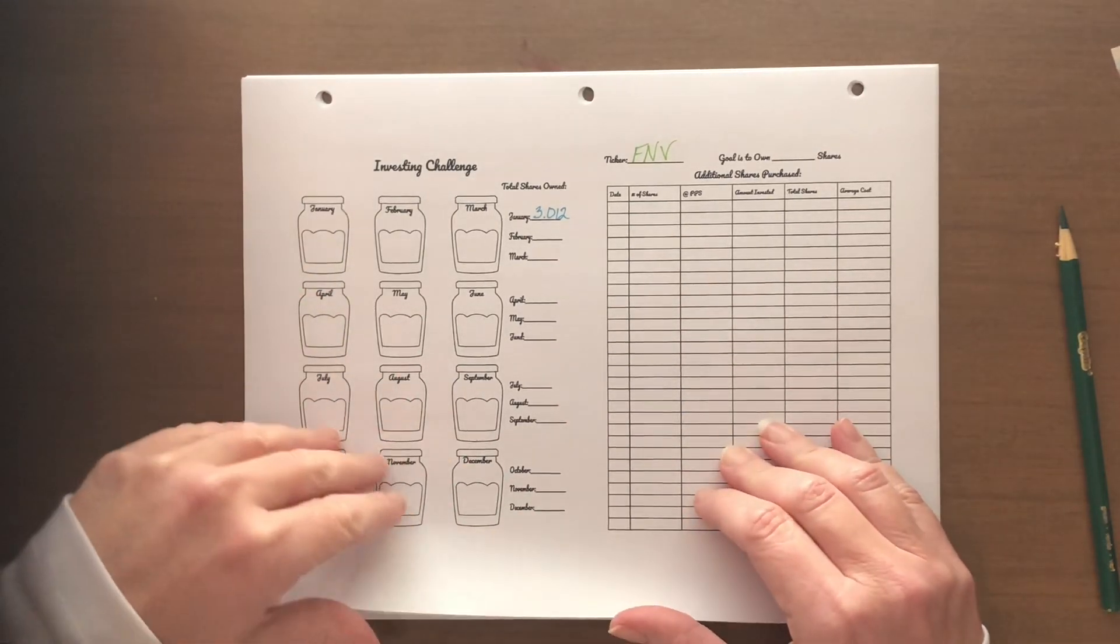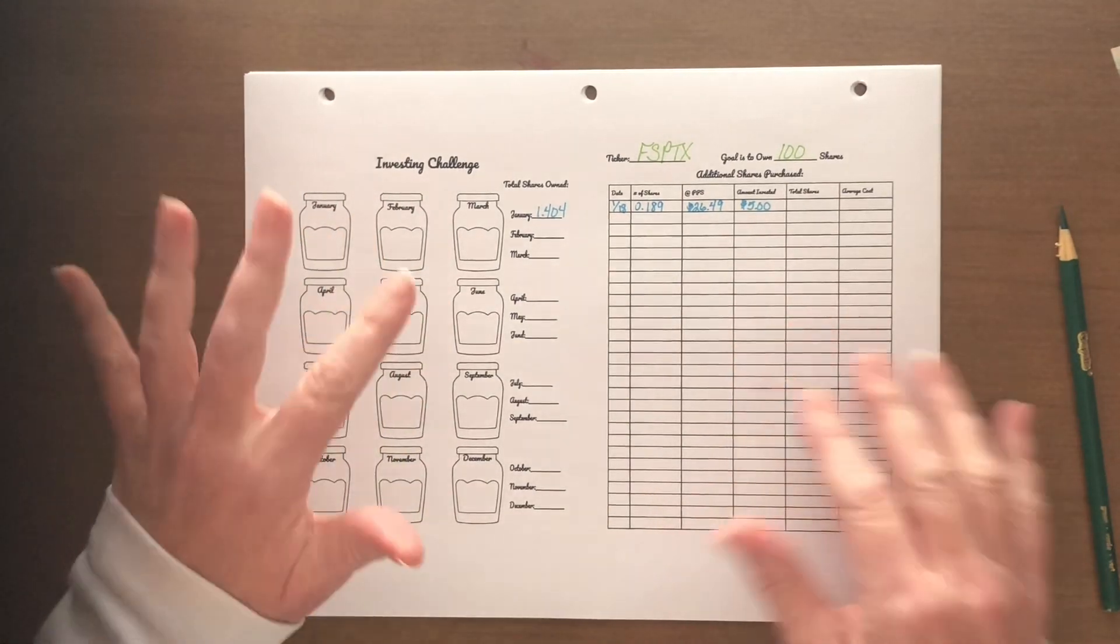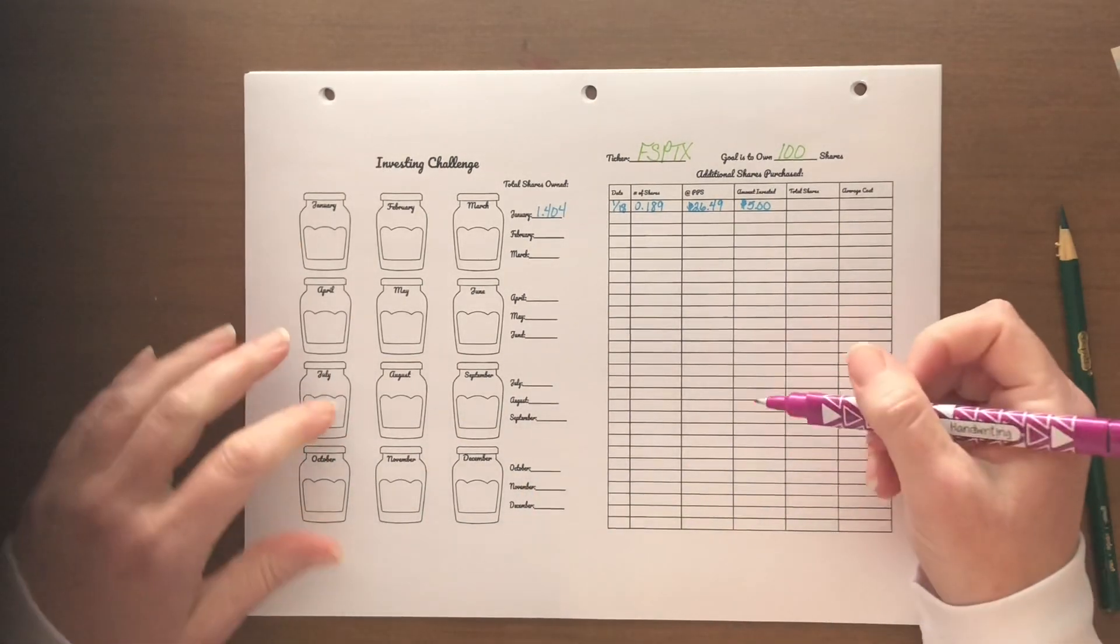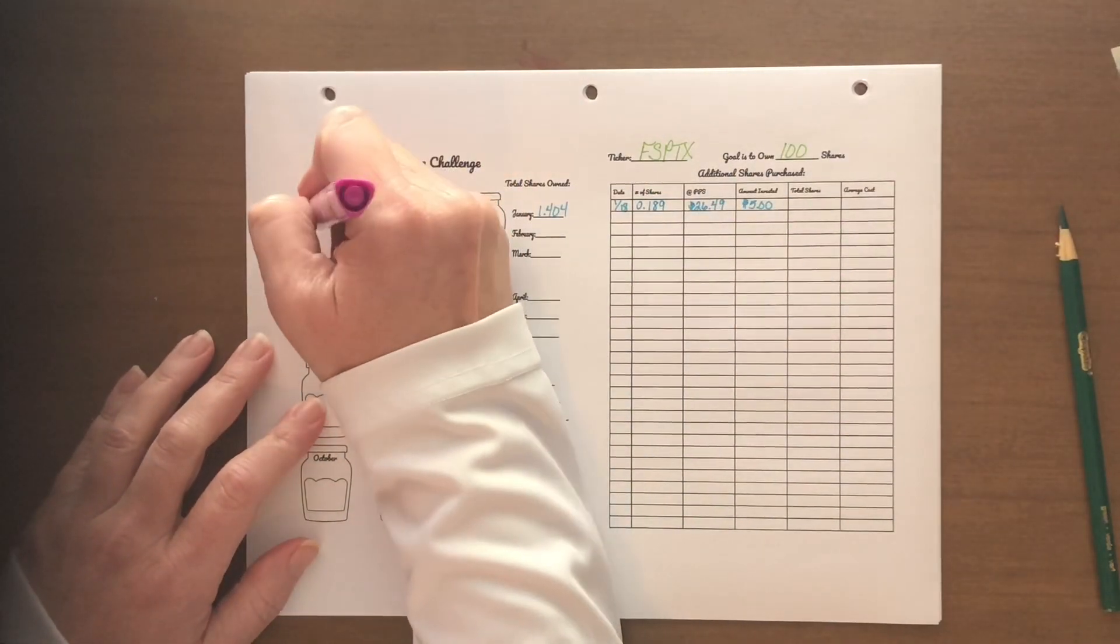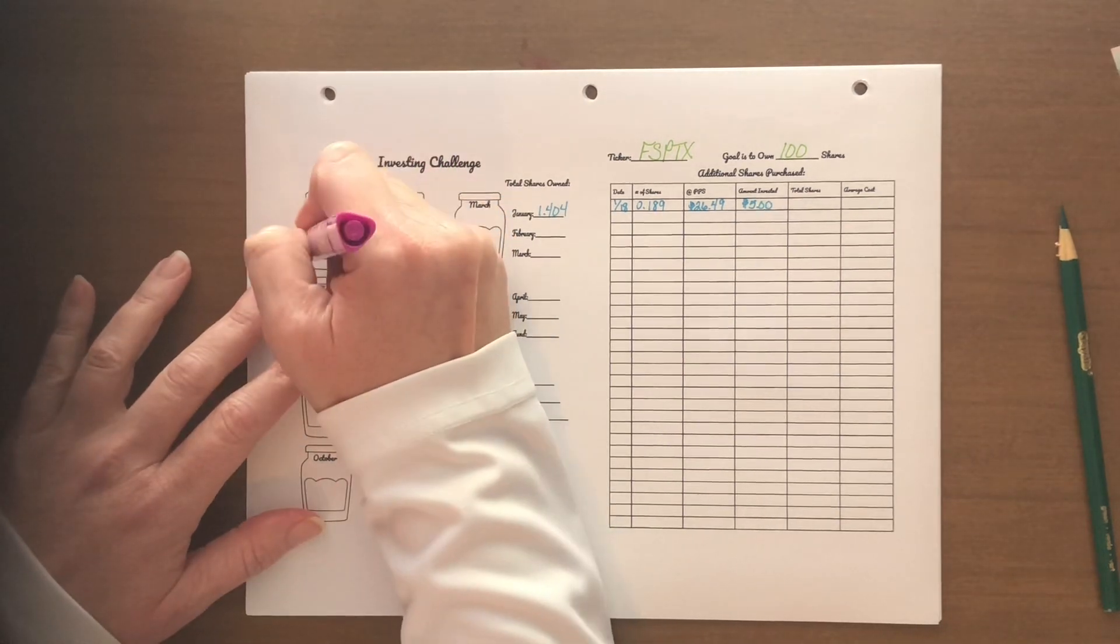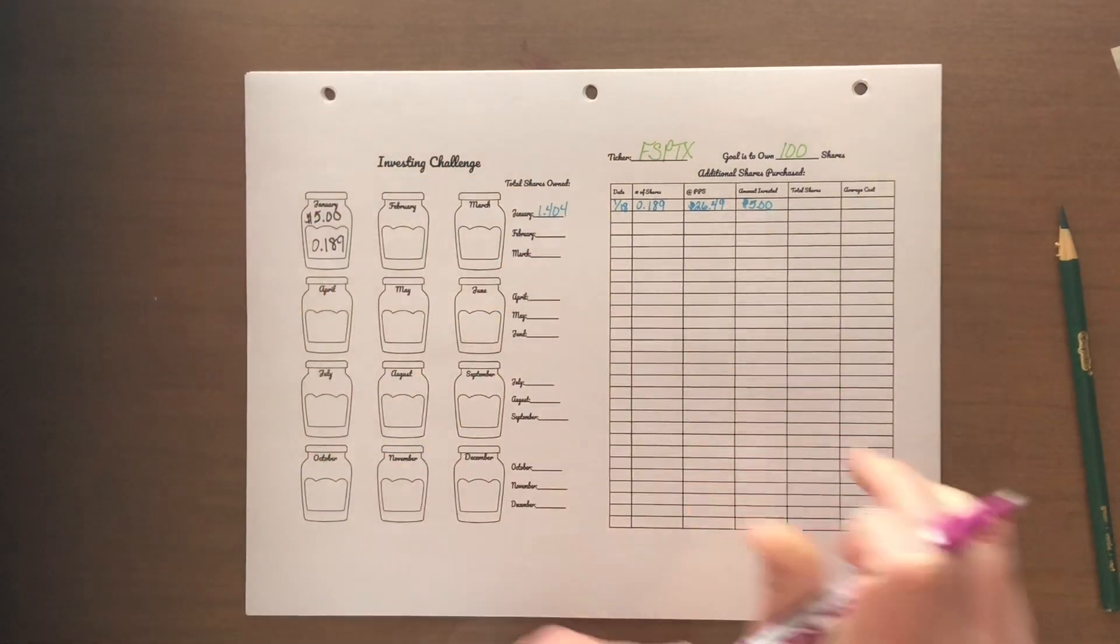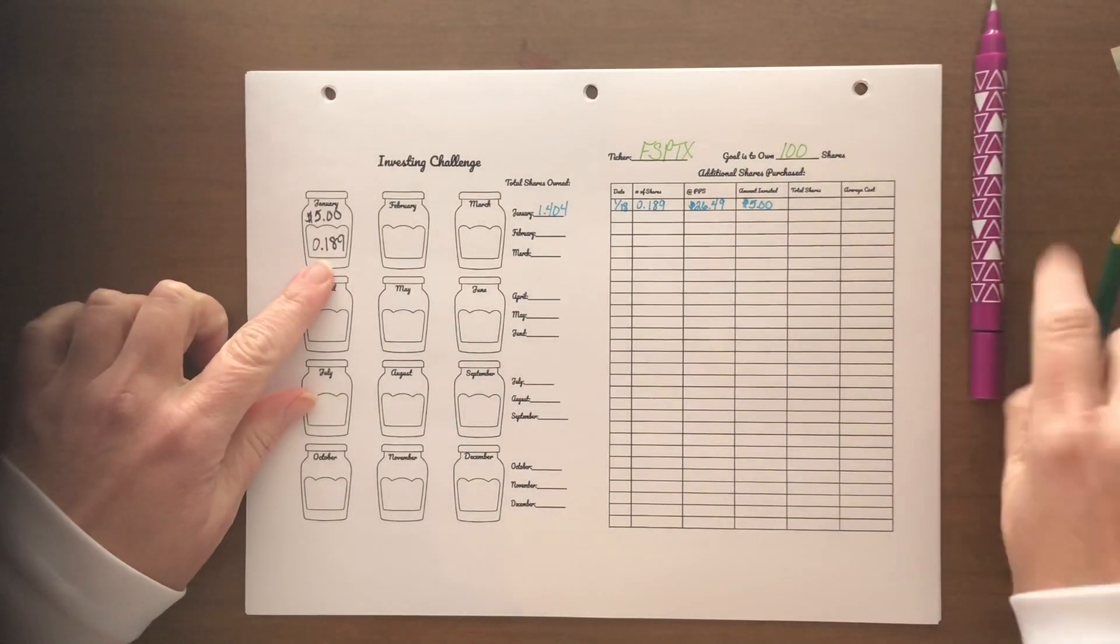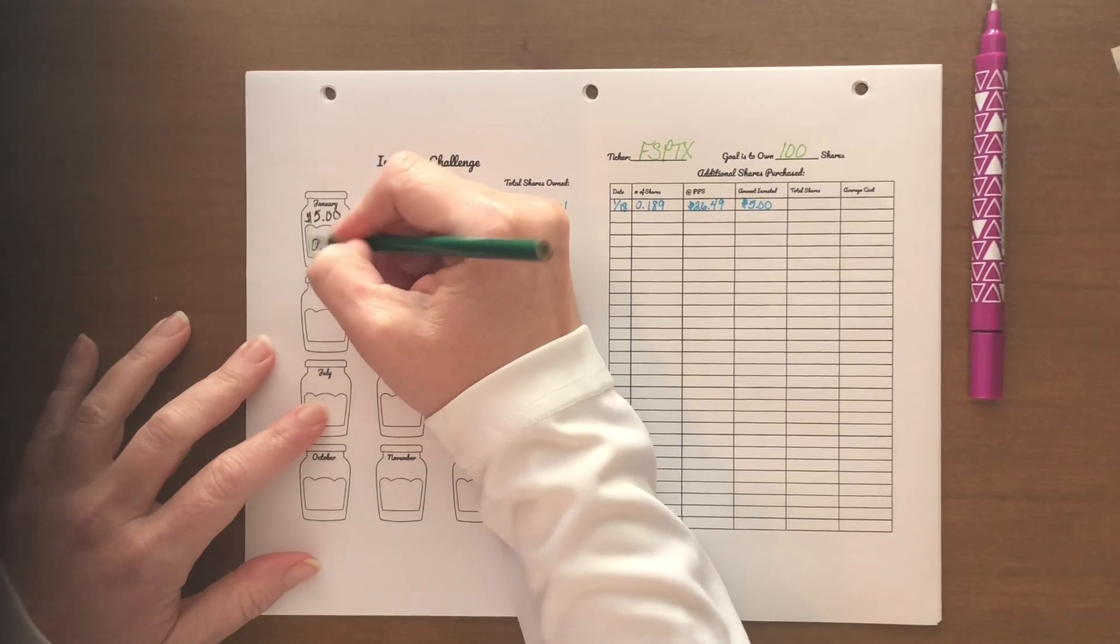So that leads us into the first of my investments that I was able to actually increase my position. FSPTX was able to get $5, and that bought me 0.189 shares. So I started with roughly 1.4 plus another almost 0.2. So roughly I'm sitting at about 1.6 shares.